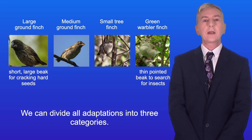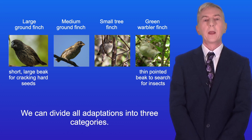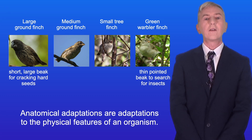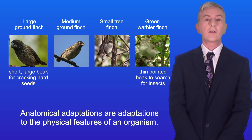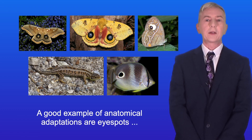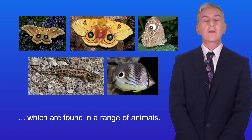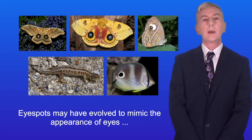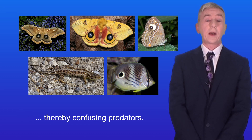Now we can divide all adaptations into three categories. Anatomical adaptations are adaptations to the physical features of an organism. A good example of anatomical adaptations are eye spots, which are found in a range of animals. Eye spots may have evolved to mimic the appearance of eyes, thereby confusing predators.